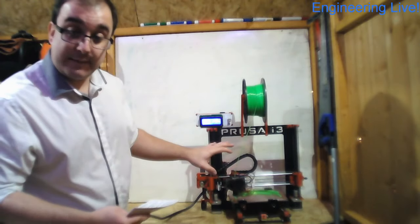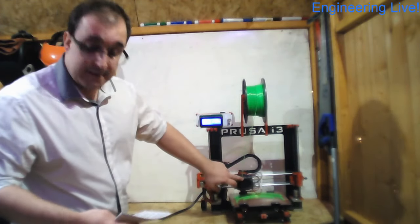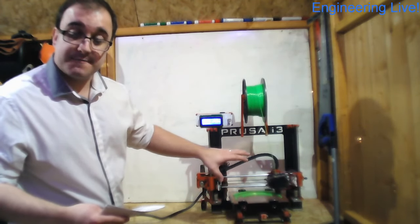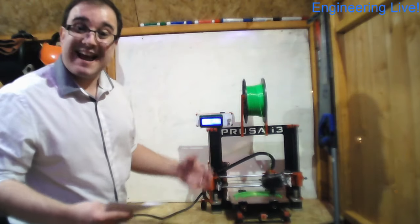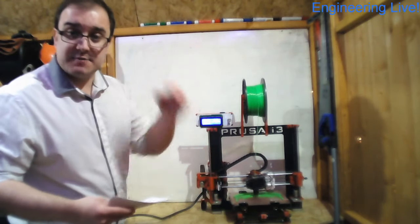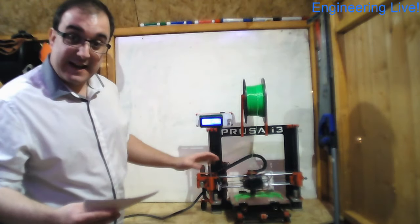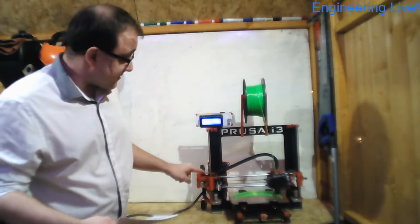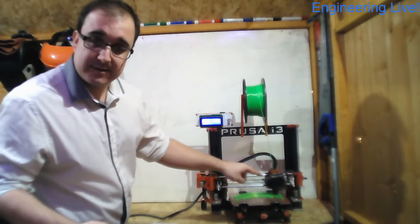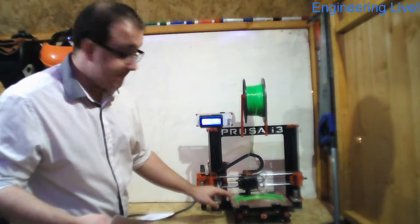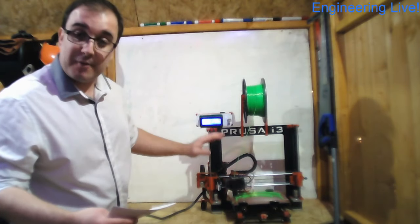Now if we look at my 3D printer here the extruder mechanism is mounted right here. And it can be moved in three different directions. And we call these directions axes. Exactly the same as you'd find on a graph in maths. And just like the axes on a graph they're called X which is our side to side movement. Y is the forward and backwards movement we've got here. And Z is the up and down movement.